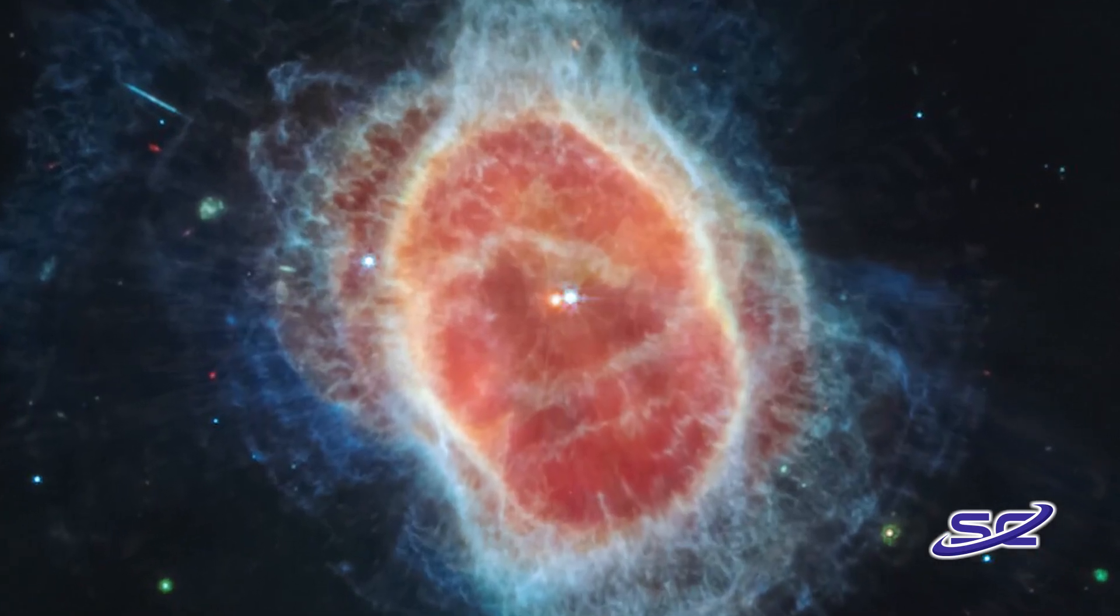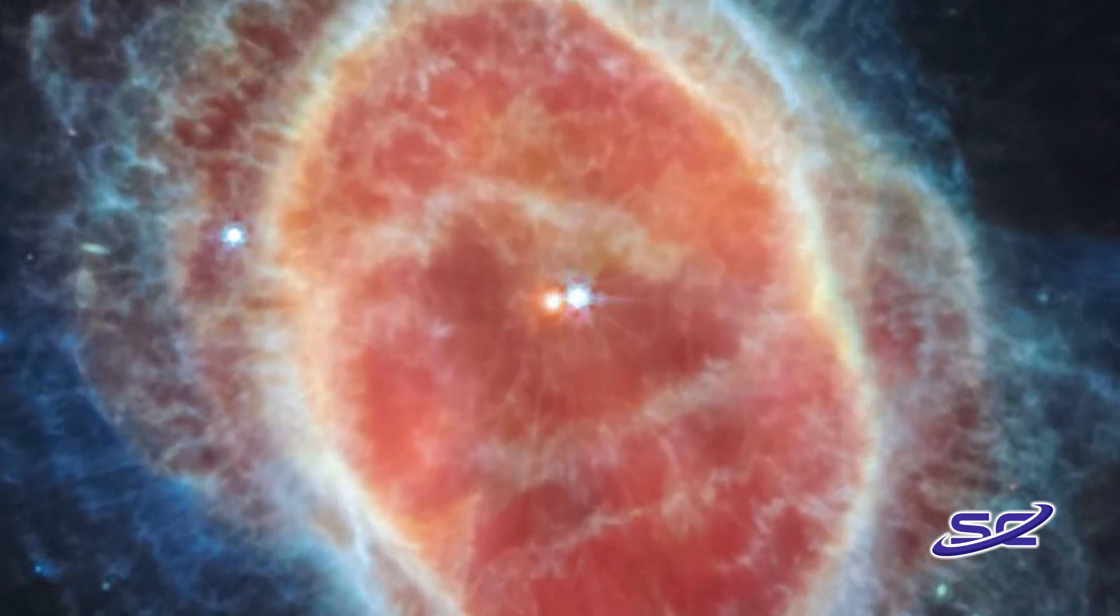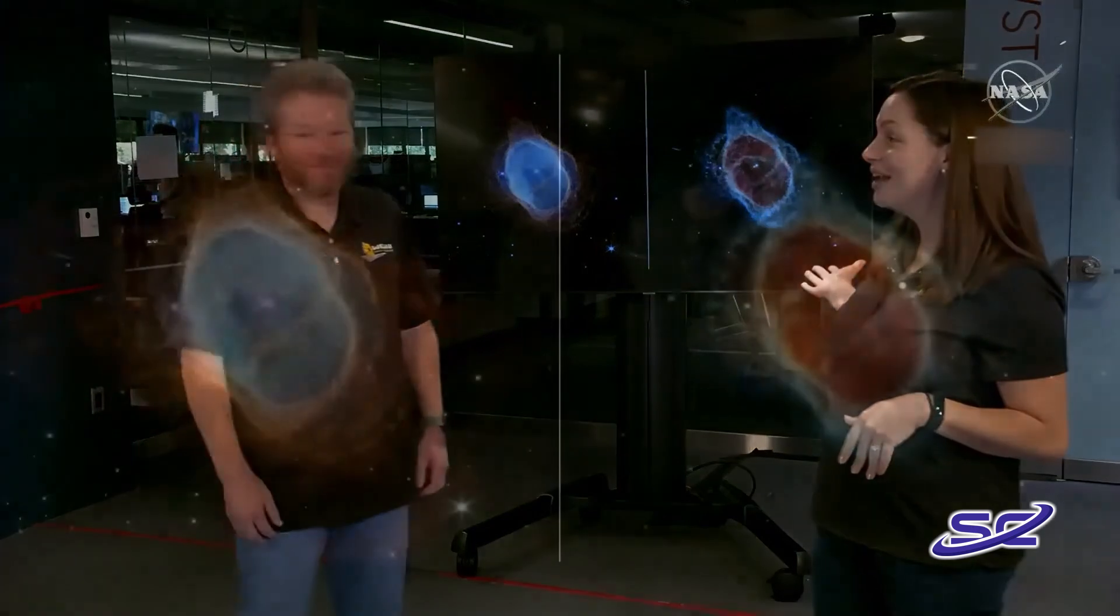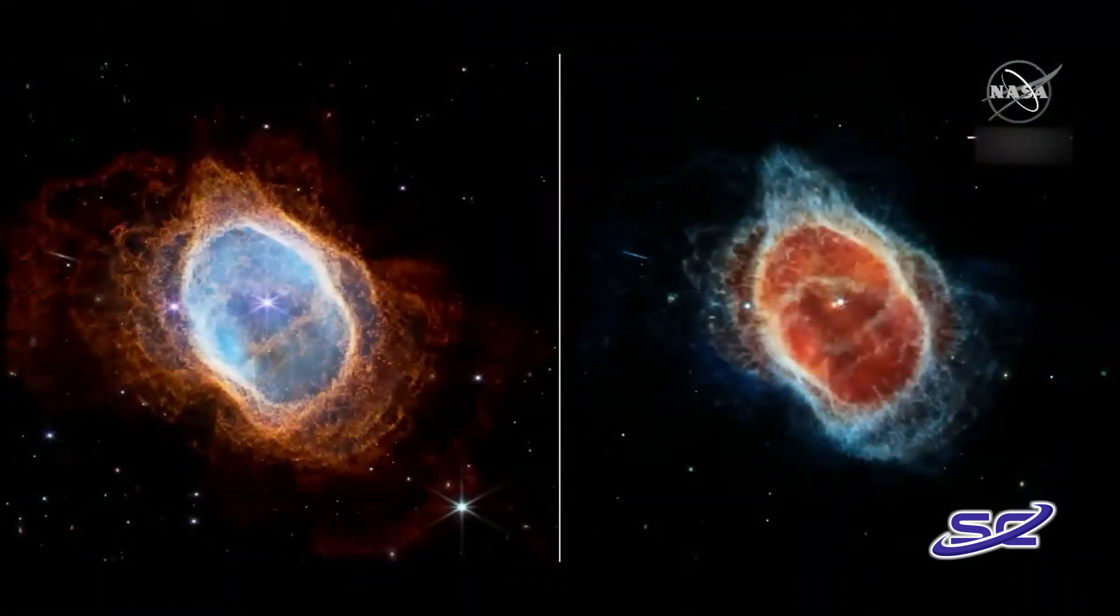Next, it's the Southern Ring Planetary Nebula, a dying star expelling gas and dust in orbit with a younger star that's helping to change the shape of this nebula. Here's more from our friends at NASA. We have a near-infrared image on our left and here on the right we have a mid-infrared image.